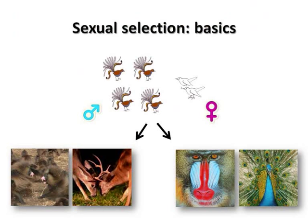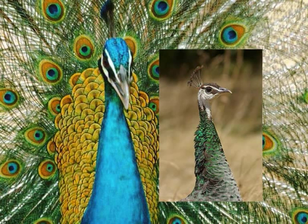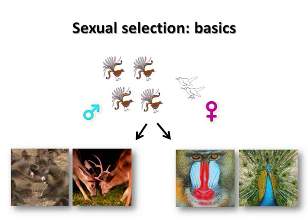He found that there are two kinds of secondary sexual characters: traits that look like armaments or weapons, and traits that are extravagant and colorful and look like ornaments. He proposed that armaments help the individuals that carry them to fight against potential rivals of the same sex to access mates, while ornaments have evolved to help individuals attract and seduce partners of the opposite sex.